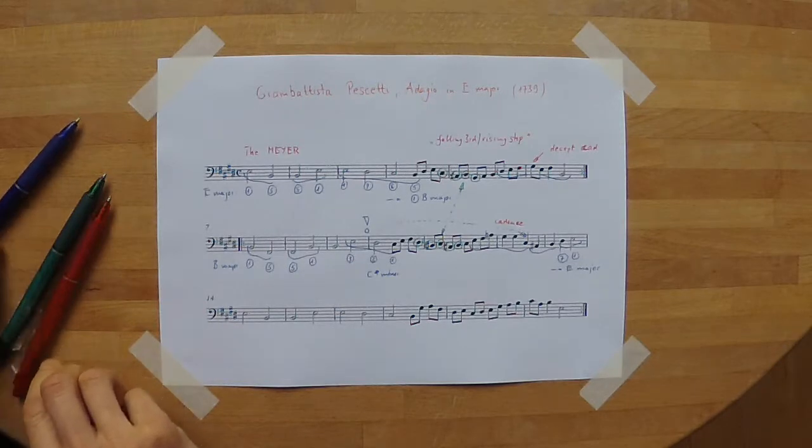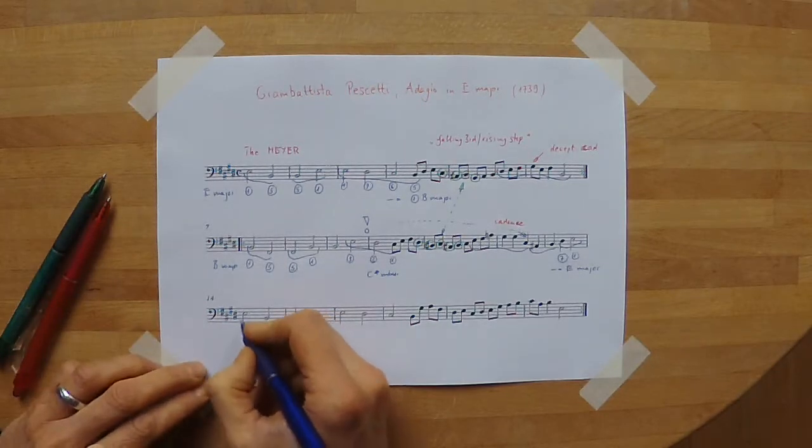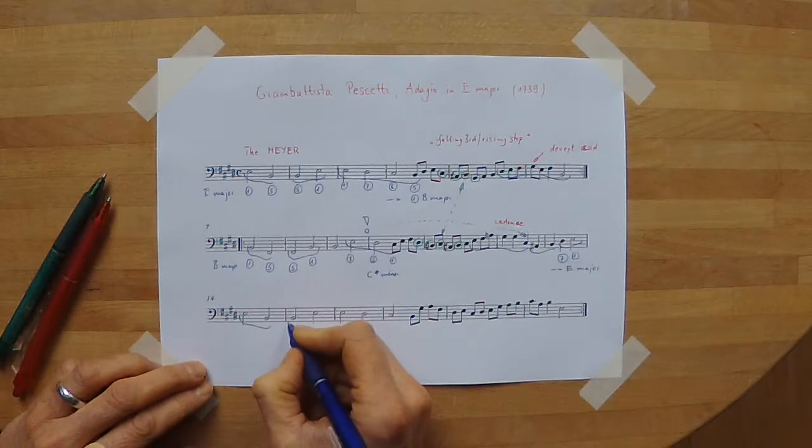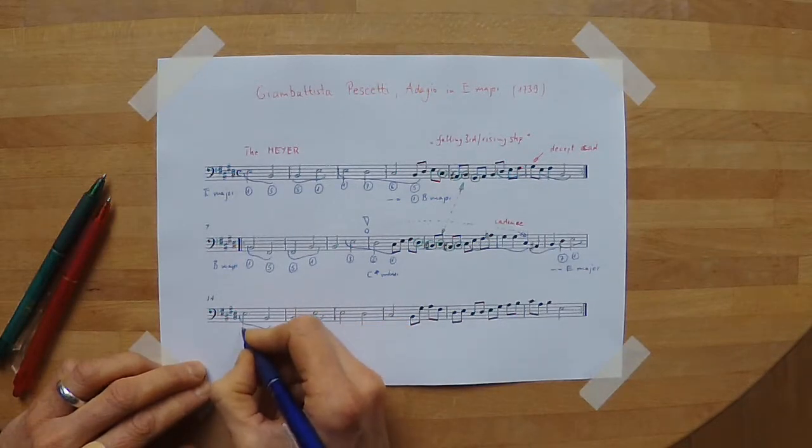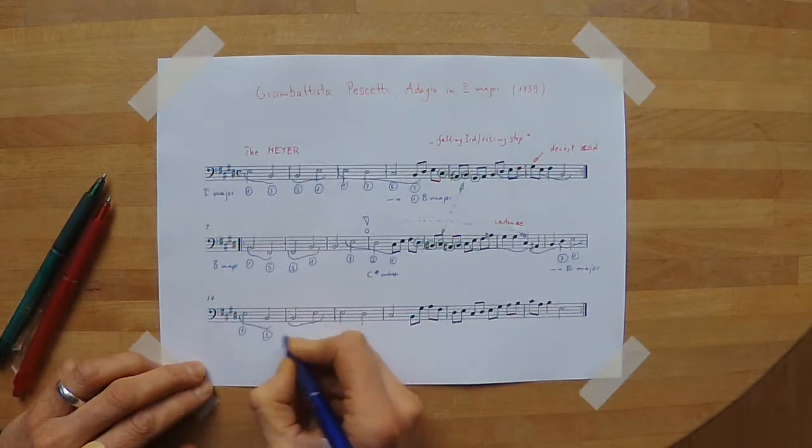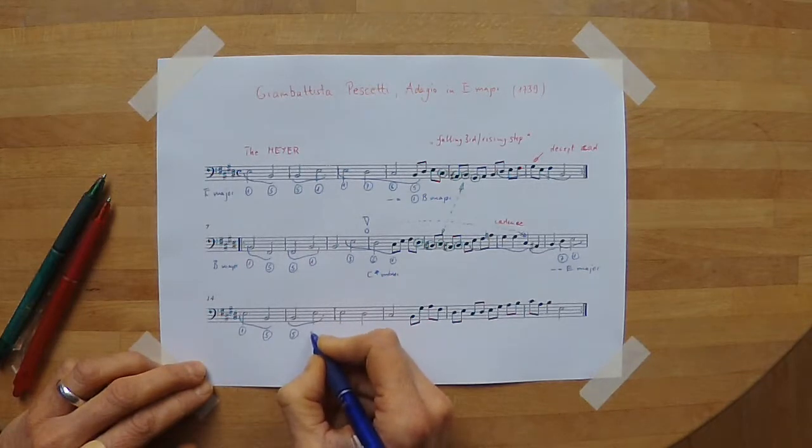So measure 14 is kind of recapitulation. Again the descending scale.